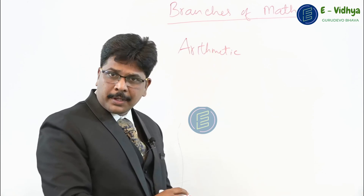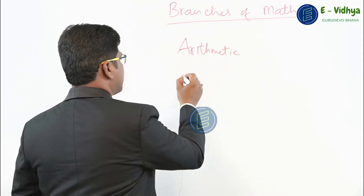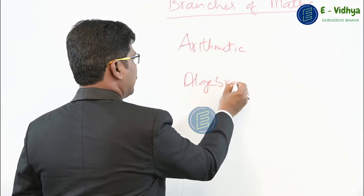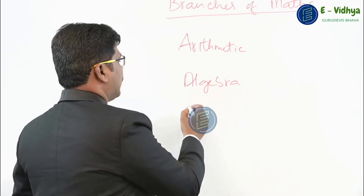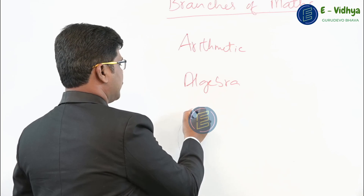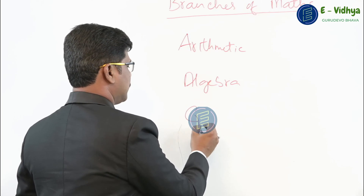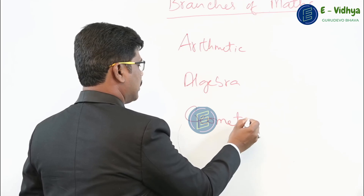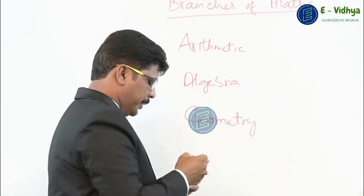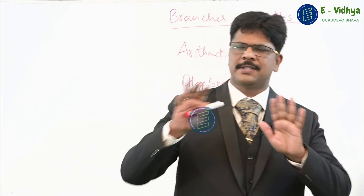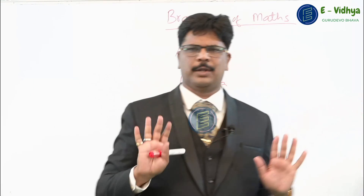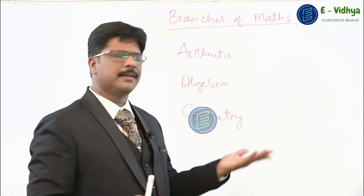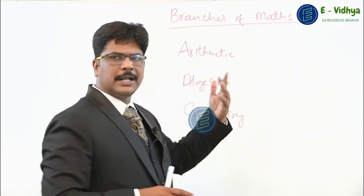The second branch is algebra and the third branch is geometry. That's it — math only deals with these three branches. But first, let's understand what exactly arithmetic, algebra, and geometry are.